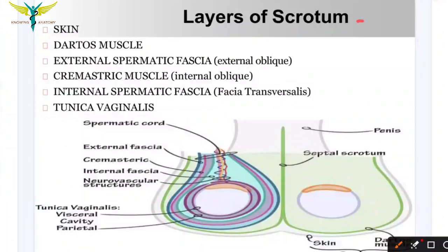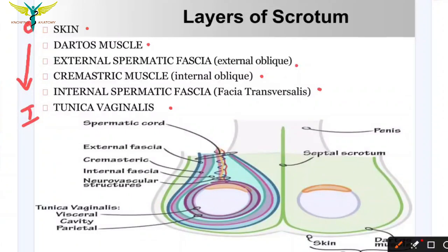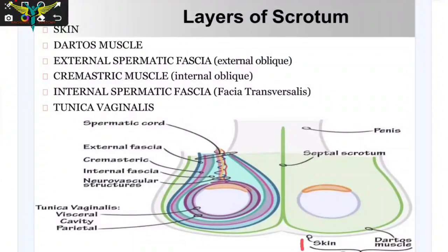Knowing about the layers of the scrotum is very important in cases of hydrocele and also hernia. The layers of the scrotum from outside to inside are: skin, dartos muscle, external spermatic fascia, cremasteric muscle (from the internal oblique), internal spermatic fascia (or fascia transversalis), and the tunica vaginalis — making six layers in total.